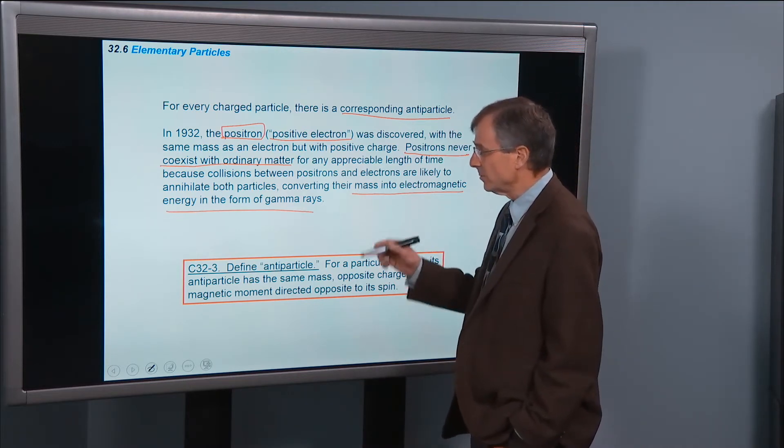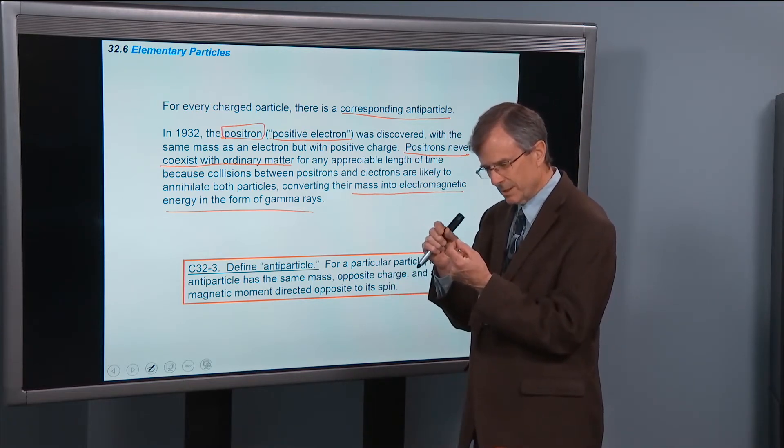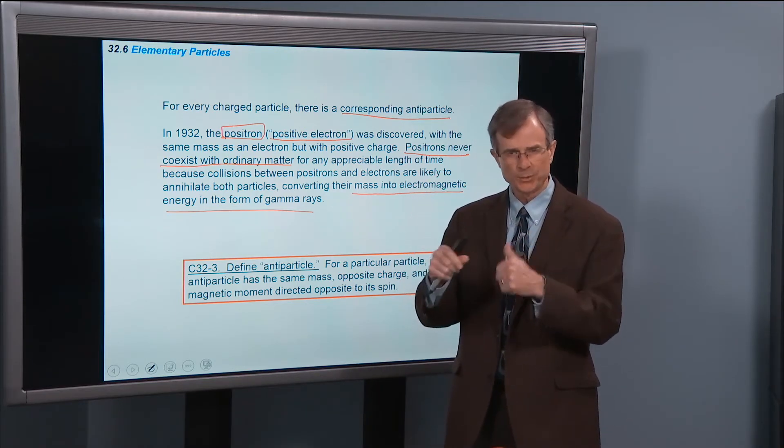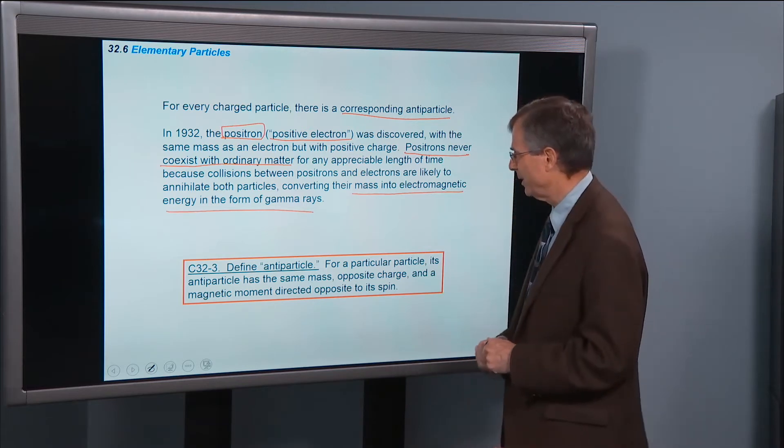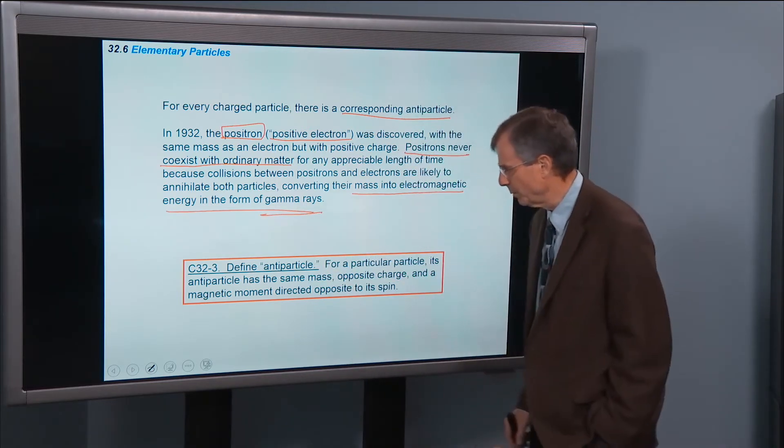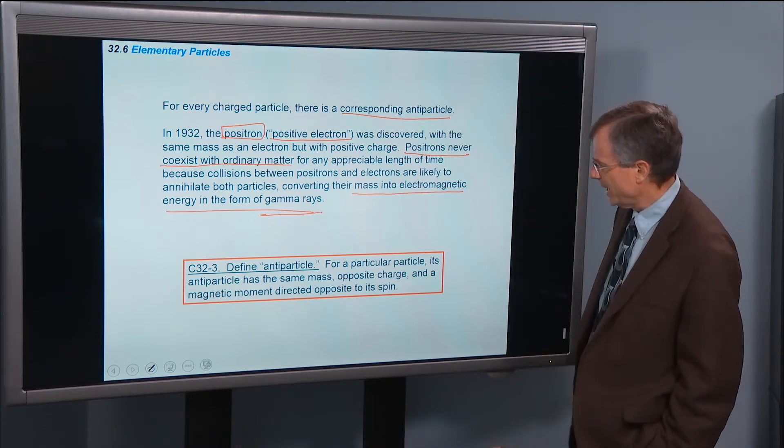Gamma rays being the most energetic of those forms of electromagnetic radiation. These reactions with electrons and positrons, the annihilation reactions, produce a huge amount of energy. Gamma photons are very, very, very energetic and very dangerous for the human body.